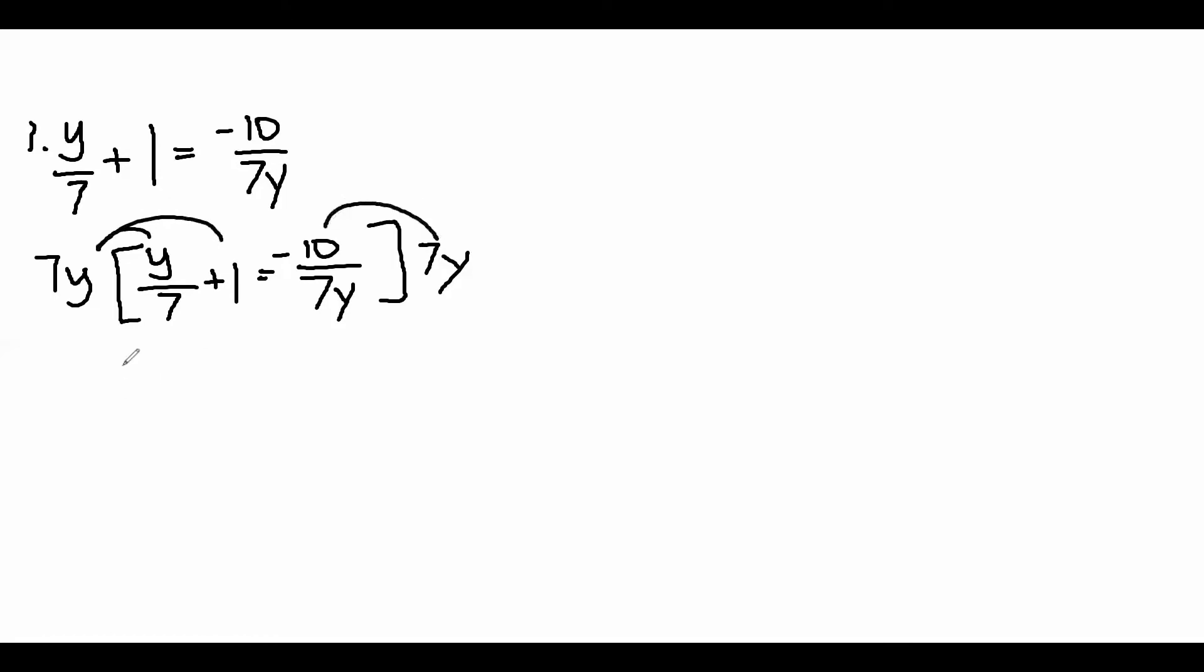Let's multiply 7y to all the terms inside the equation, which will give us y squared plus 7y equal to negative 10. Put the equation in its standard form.